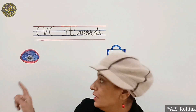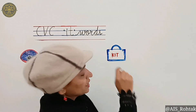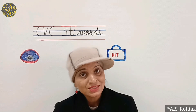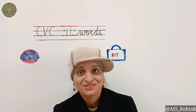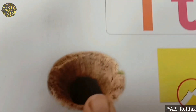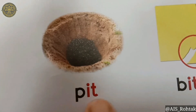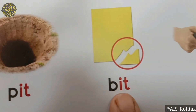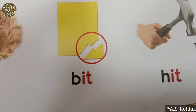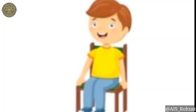For example: 'it' as in 'pit', 'it' as in 'kit'. So let's learn how to write CVC words with 'it'. Puh-it: pit. Buh-it: bit. Huh-it: hit. Kit. Sit.